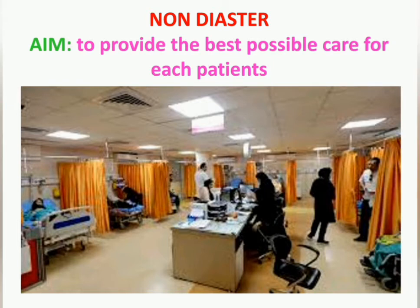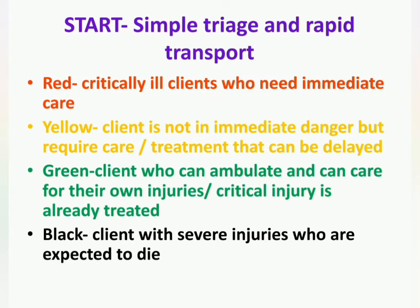In non-disaster management, the aim is to provide the best possible care for each available patient. Let us begin triage management with the simple step of START — Simple Triage and Rapid Transport. Here we have four color codes: red, yellow, green, and black. Red is for critically ill patients who need immediate care. Yellow is for patients who are not in immediate danger but require care that can be delayed. Green is for patients who can ambulate and care for their own injuries, or whose critical injury is already treated. Black is the final code for patients with severe injuries who are expected to die.